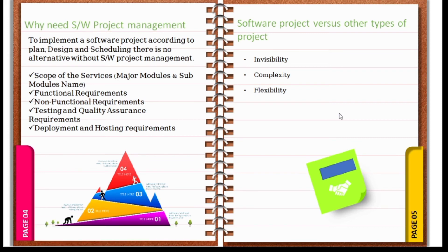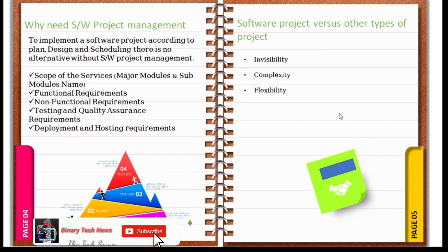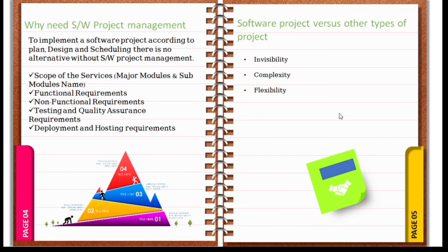Software project versus other types of projects: what makes a software project different? The software project is called Invisible, while a real-life project — like a road or bridge — is visible. The software project is also very complex and very flexible, and software project management can be very strong with user recommendations implemented.